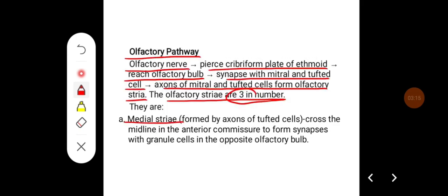Medial stria are formed by the axons of tufted cells, they cross the midline in the anterior commissure to form synapses with granule cells in the opposite olfactory bulb.